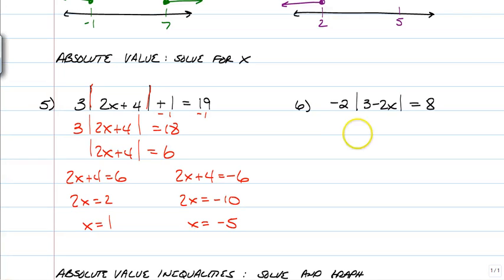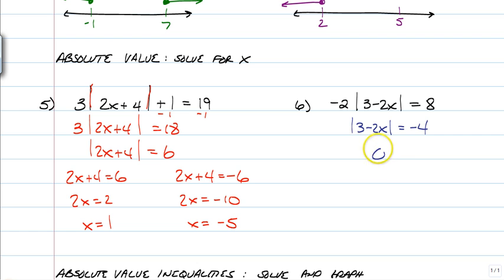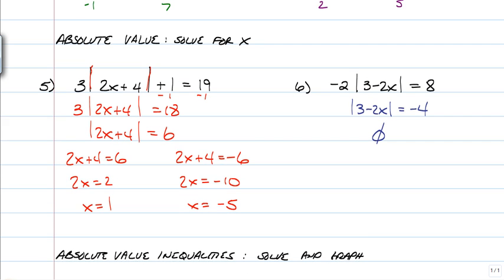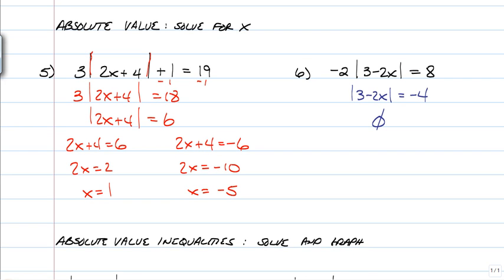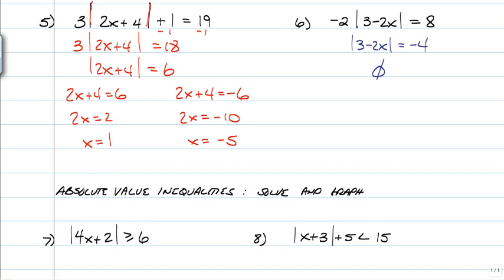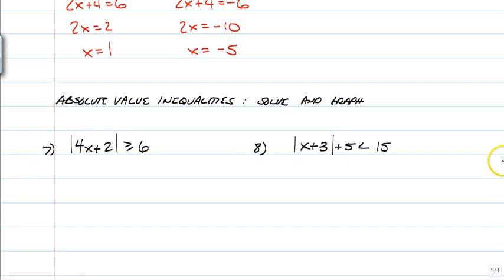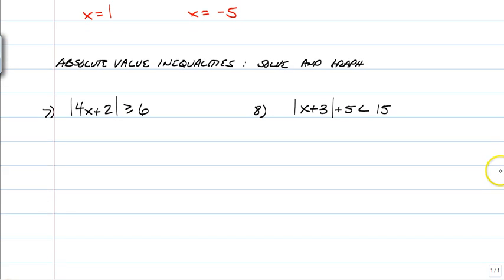Number 6, same kind of thing. 3 minus 2x is equal to negative 4. And if you're slick, you will stop right now. There's no need to go any further. That's because absolute value is always equal to a positive number — it's never equal to a negative number. So if you notice that with absolute value right away, you can say there's no solution.